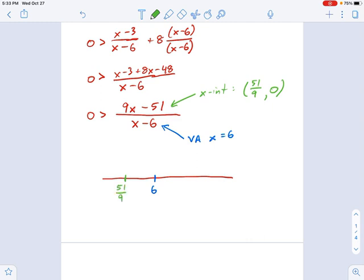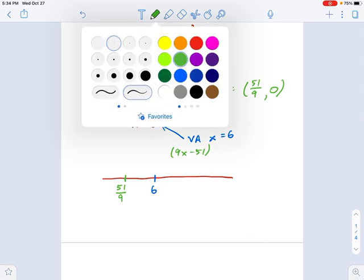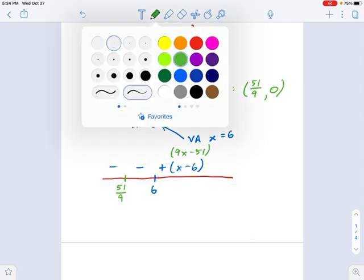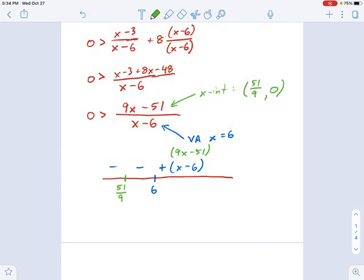And now I can build the sign array using these factors. So 9x minus 51 goes up there. And down here, we have x minus 6. And that's going to be positive, and then it turns negative. And the other one, 9x minus 51, is going to be positive, positive, and then negative like this.